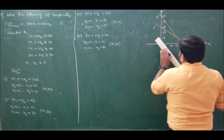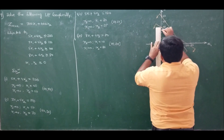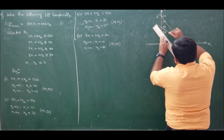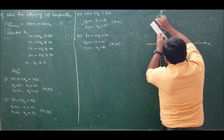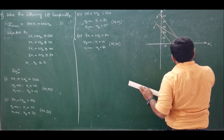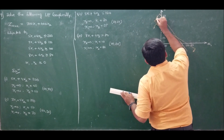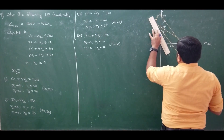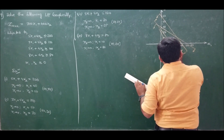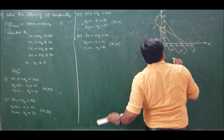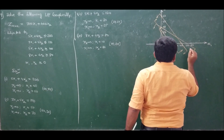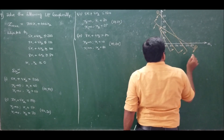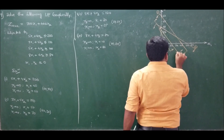Line 3 has coordinates (20, 25) — connect these. This constraint has a greater-than-or-equal-to sign, so it moves upward. Line 4 has coordinates (10, 20) — connect these. It also has a greater-than-or-equal-to sign, so this line also moves upward. We now have all four constraints plotted.